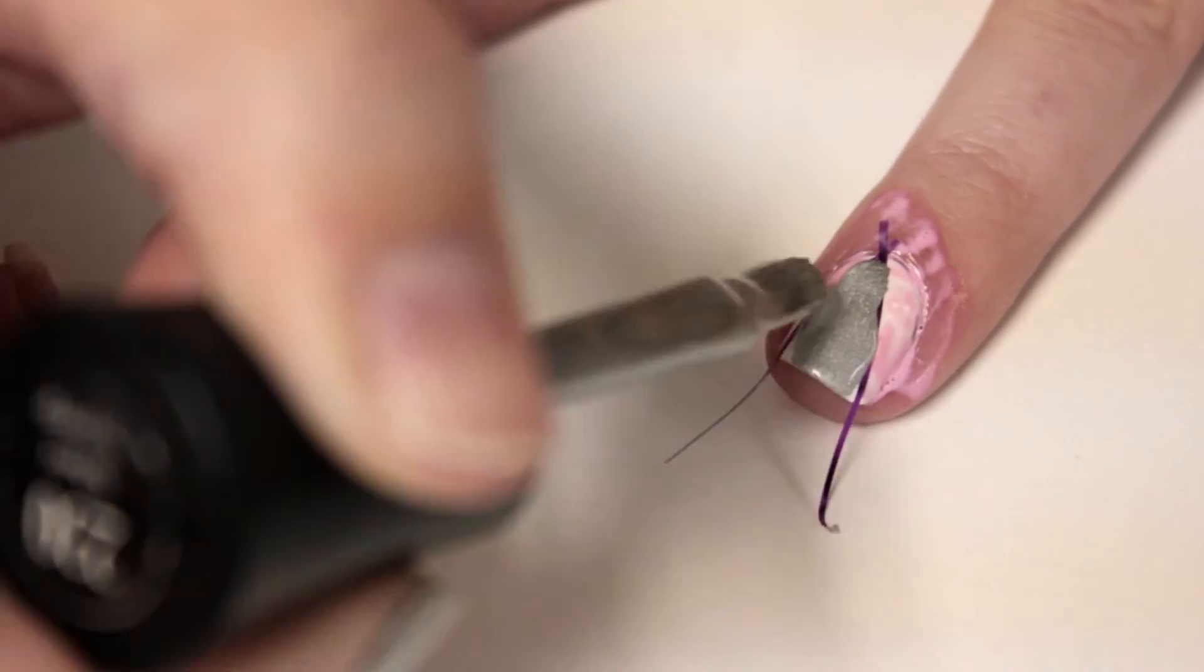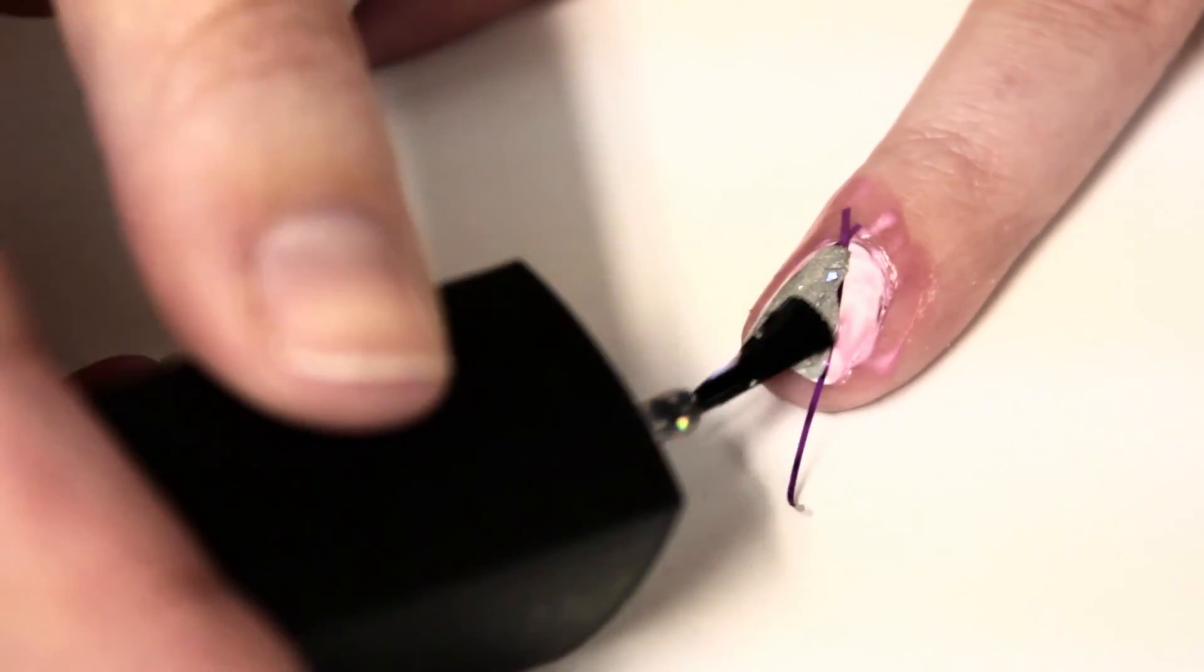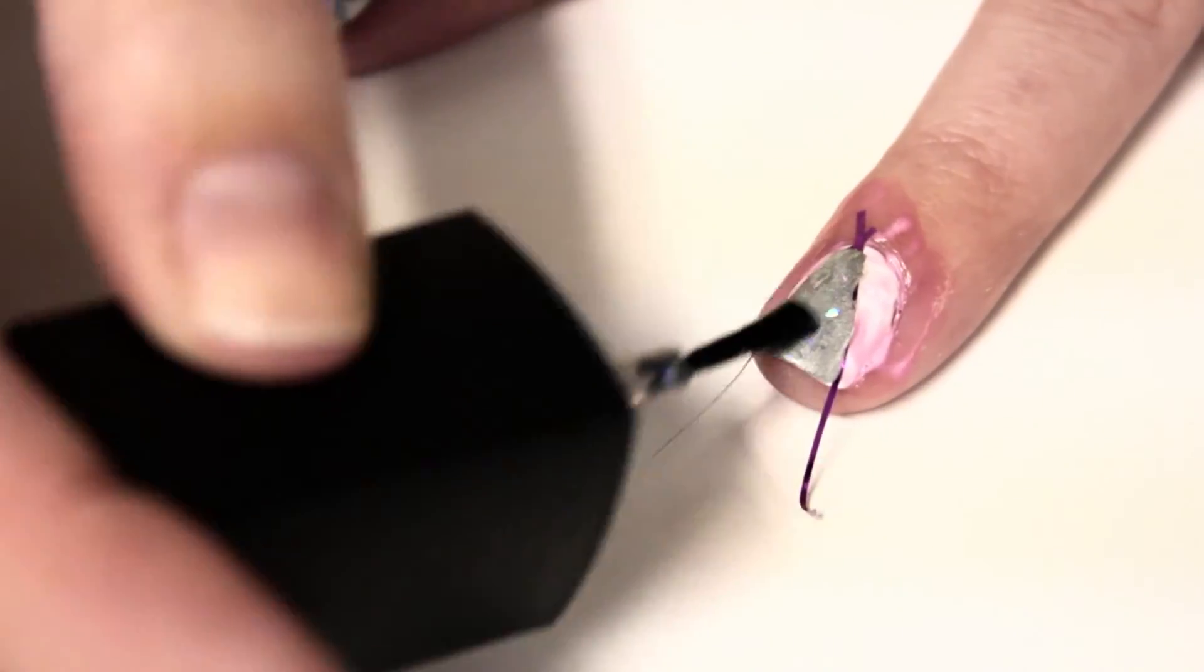Now do a coat of silver nail polish, then do a coat of Del Sol's nail polish of the month, and remove the tape.